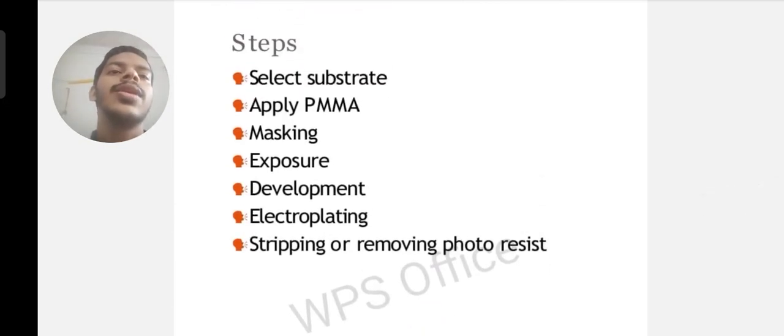Steps in LIGA process: First step is select substrate, then apply PMMA, masking, exposure, development, electroplating, stripping or removing photoresist.